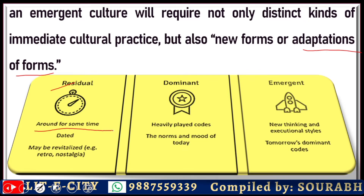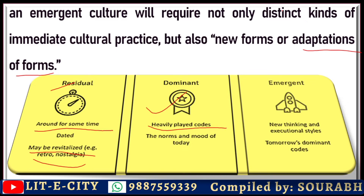Residual has been around for some time; it may be revitalized in the form of retro or nostalgia. It may appear again and again — it is not on the surface, but it is still not gone. It may anytime come back to the surface. Dominant consists of heavily played codes — it is the lifestyle of the daily common man, the norms and mood of today. While the emergent is new thinking and new styles, and it is the code which is going to be dominant in the future.